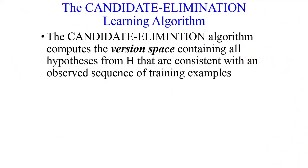The Candidate Elimination Algorithm computes the version space containing all the hypotheses from the hypothesis space H that are consistent with an observed sequence of training examples. In the case of the Find-S Algorithm, we get only one most specific hypothesis, but with the Candidate Elimination Algorithm, we get a version space which contains all hypotheses consistent with the training examples provided.